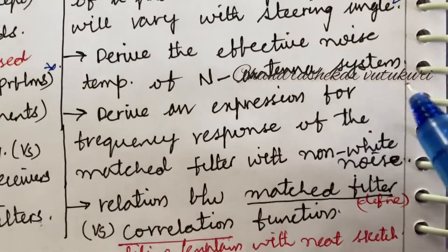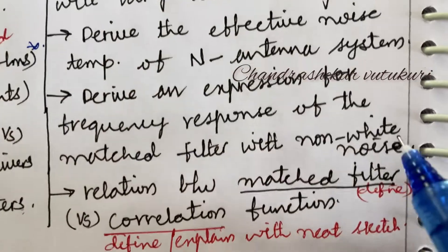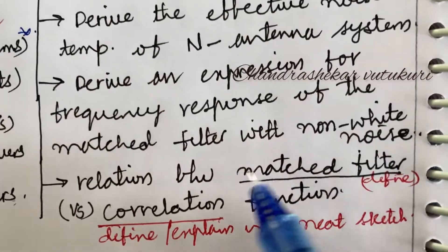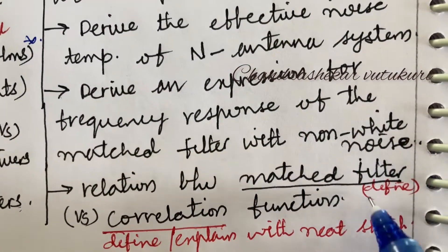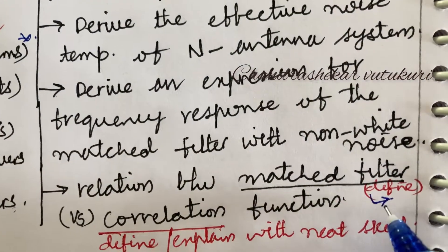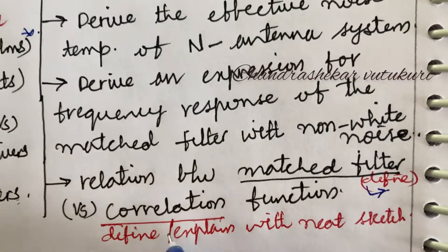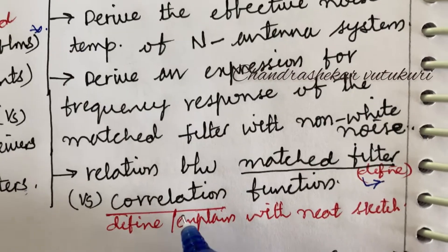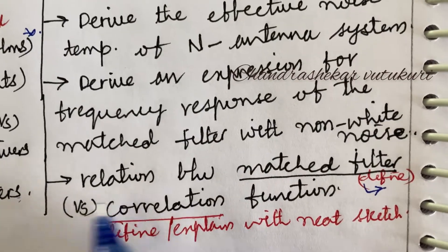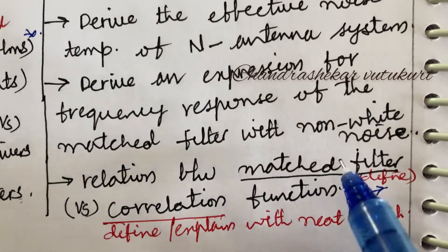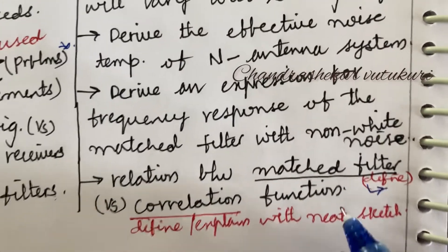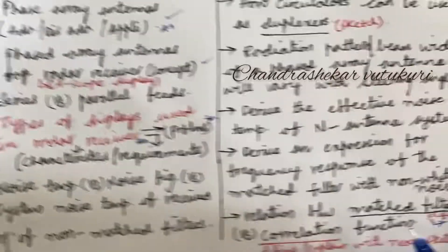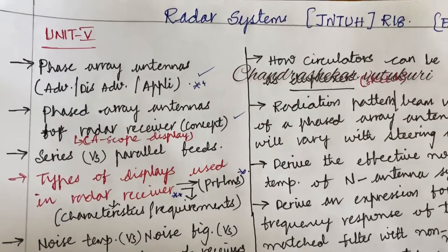The relation between matched filter and the definition of matched filter may be a short question. Define correlation may also be a short question. The difference among them explained with a neat sketch may be the long question. Dear students, this is part of the 10th and 11th question in the question paper.